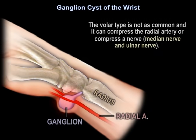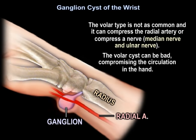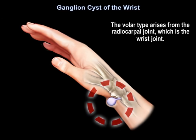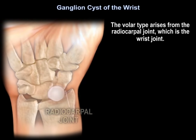The volar type is less common and can compress the radial artery or a nerve. You always want to check the two nerves: the median nerve and the ulnar nerve. The volar cyst can be serious — it can compromise the circulation in the hand. It arises from the radiocarpal joint, which is the wrist joint.